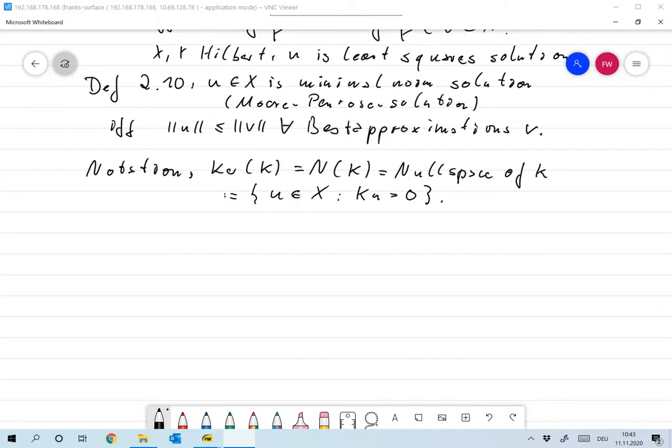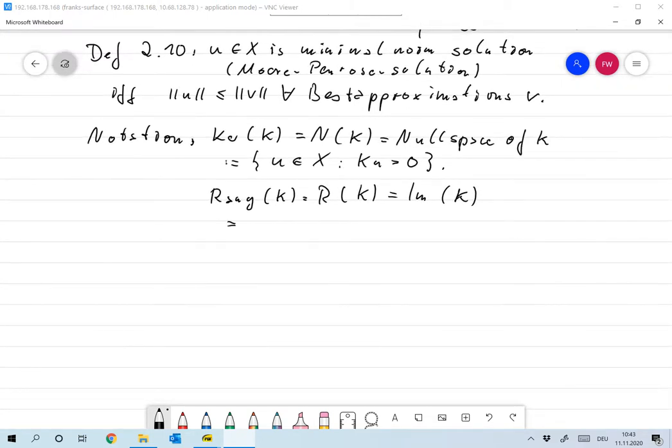And on the other hand the range of K, sometimes written as R(K) or the image of K, is the set of all v in Y for which the equation Ku = v is solvable. So there is u in X such that Ku is equal to v.